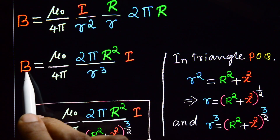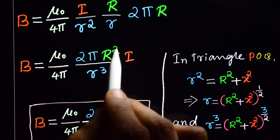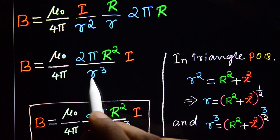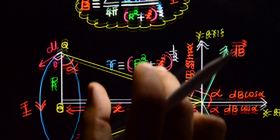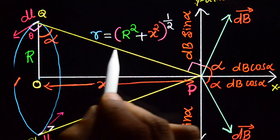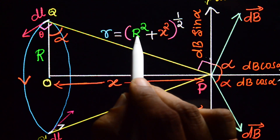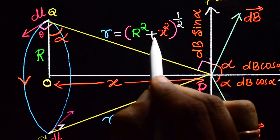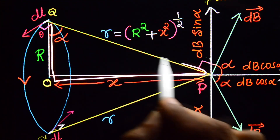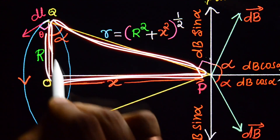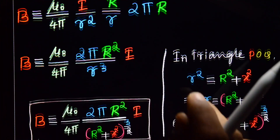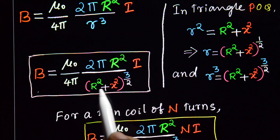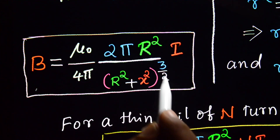The equation becomes B = (μ₀/4π) × (2πR²/r³) × I. Now, from the right-angle triangle POQ, by Pythagoras theorem, r² = R² + X², so r = (R² + X²)^(1/2). Therefore r³ = (R² + X²)^(3/2).